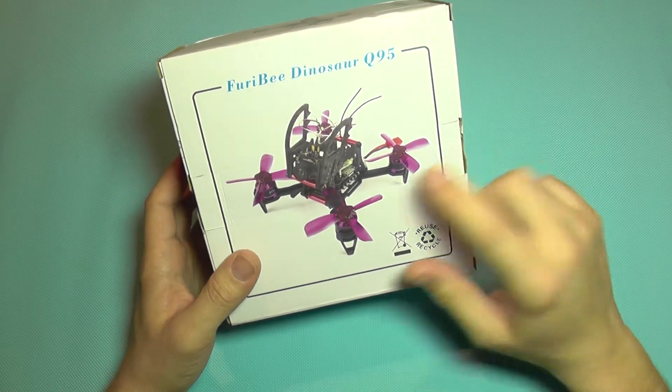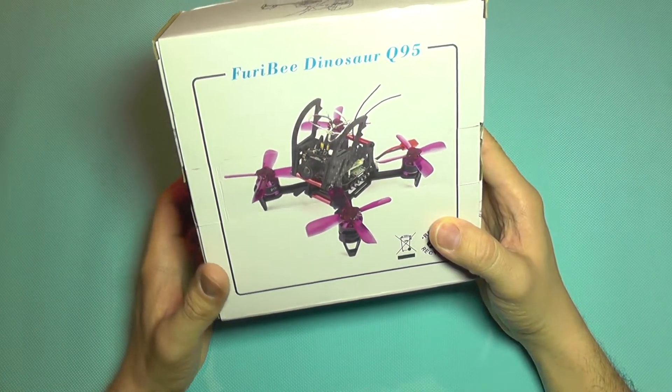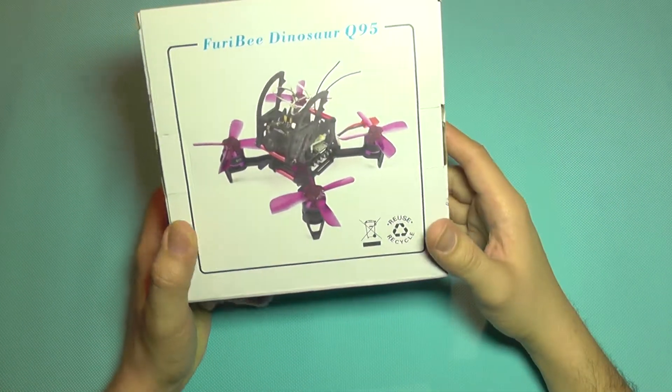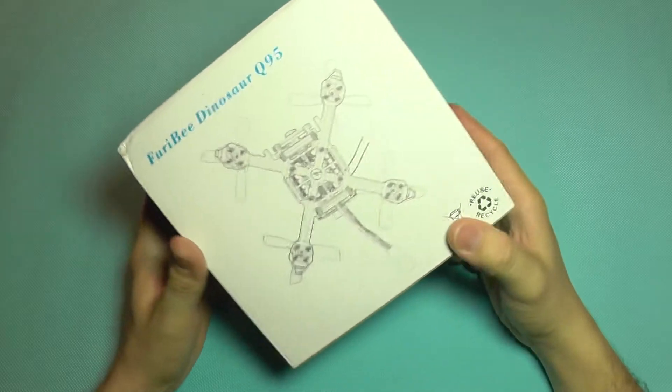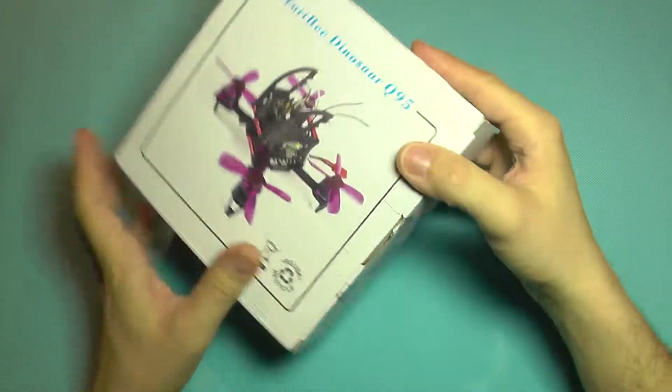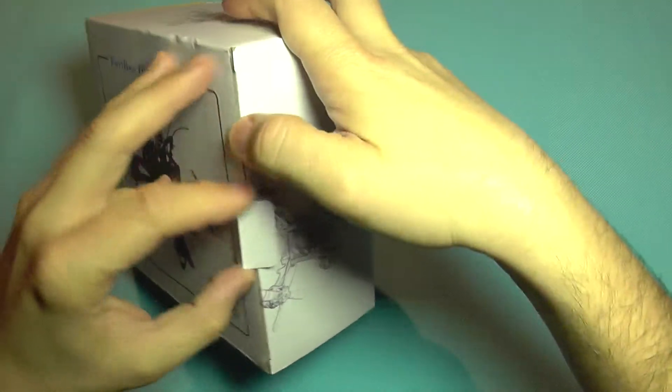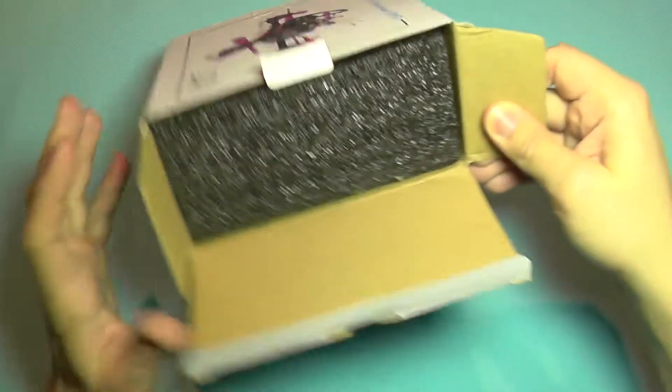It's actually the distance between the motors and this is called Dinosaur because of its shape. Somehow this should resemble the Dinosaur, but I think you need a lot of imagination to see this as a Dinosaur as it's more looking like an insect than a prehistoric creature.